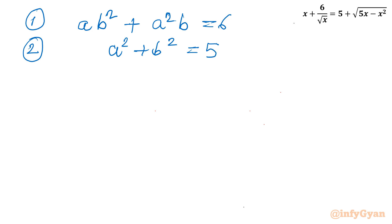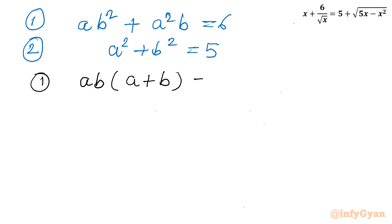From equation 1, I will take ab common: ab(a + b) = 6. From here I can write a + b = 6 over ab, where ab cannot be 0.